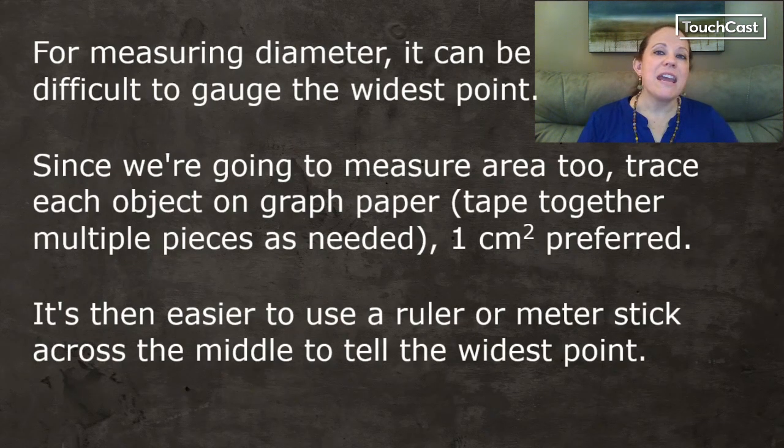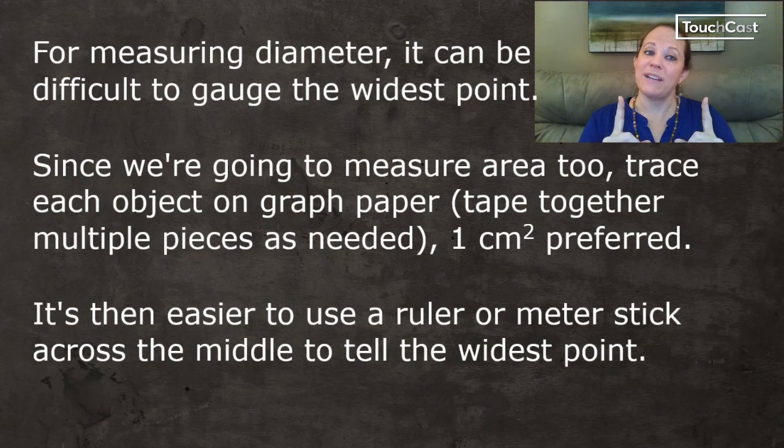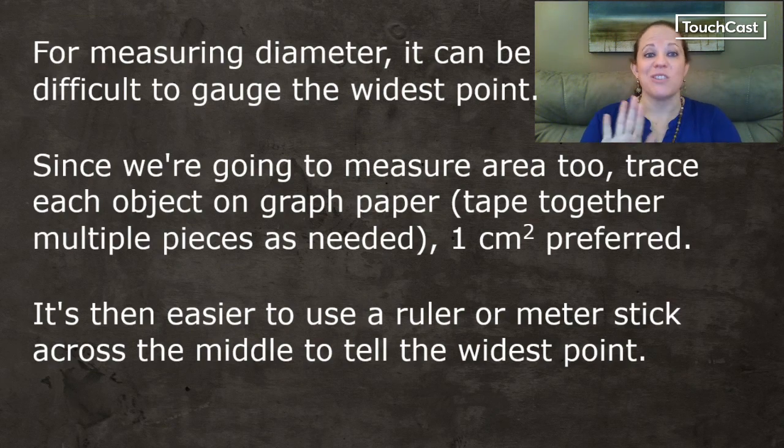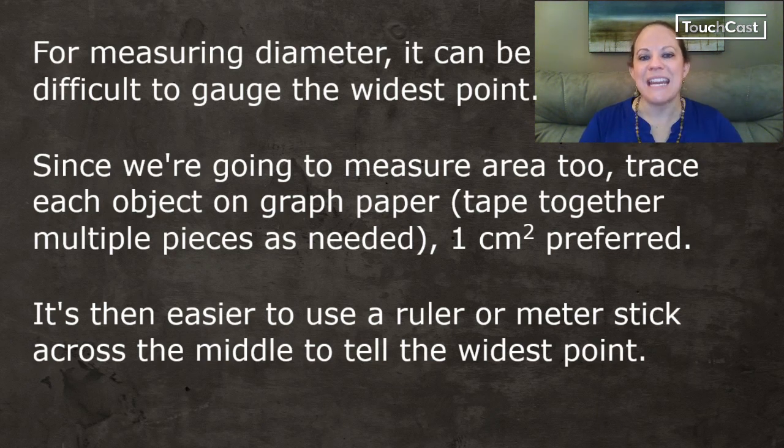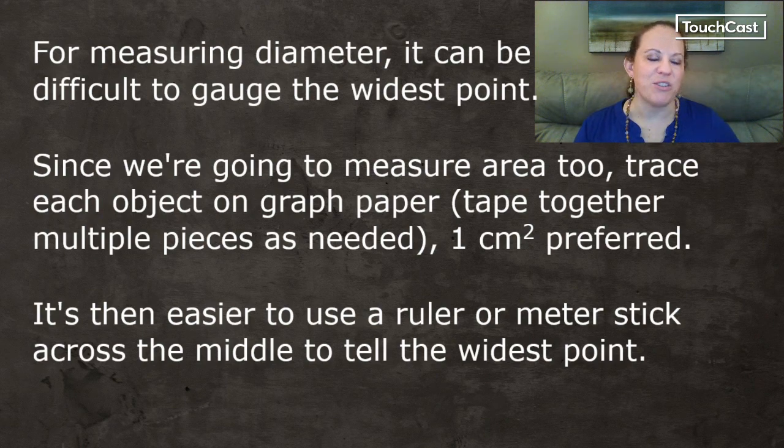And for the diameter, it can be difficult to measure the widest point on the circle. And my workaround for that is that since we're going to measure the area too, we're going to trace each object on graph paper. And we can tape together multiple pieces as needed. And it's a lot easier than to use a ruler or meter stick to measure the widest point.